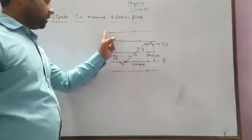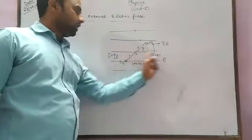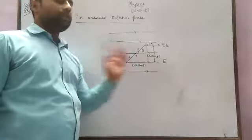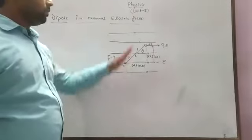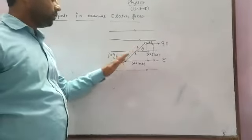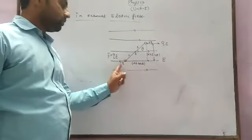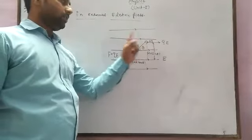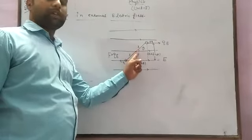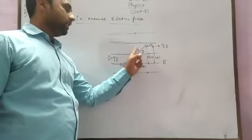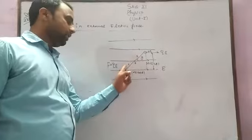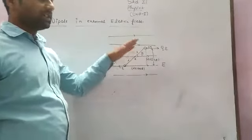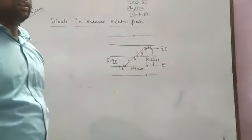This is the electric field and this is the direction of the electric field. Now a dipole is placed: this is minus Q and this is plus Q. This is the center point of the dipole, and this distance on each side is L. This dipole is placed in the external electric field.